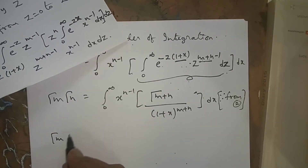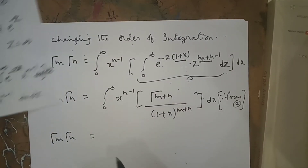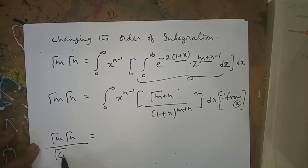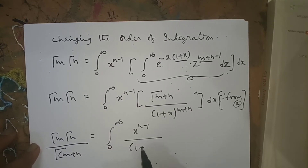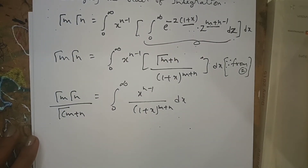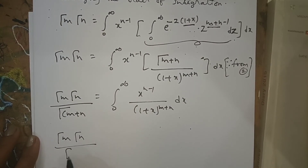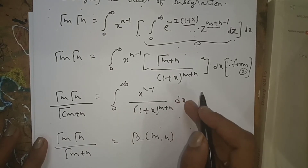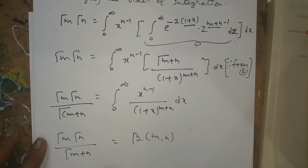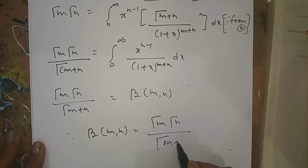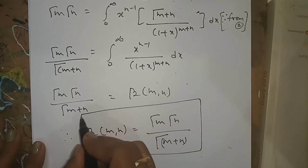Now, the right-hand side equals Beta(m, n) by the second property of the Beta function. Therefore: Beta(m, n) = Γ(m)·Γ(n) / Γ(m+n). Hence proved — this is the relation between the Beta and Gamma functions.